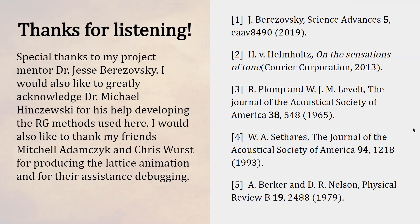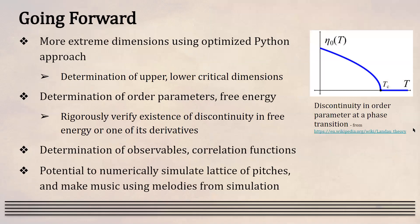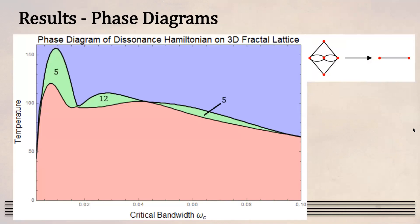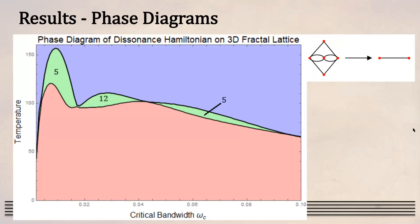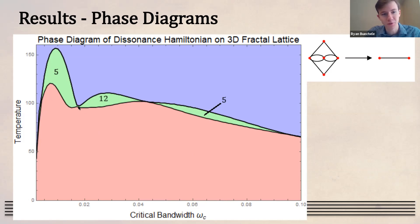A question was raised about a slide showing the phase diagram — there appears to be a small bridge between the '5' and '12' phases. Ryan explains that the recursive search for phase boundaries only runs to a certain resolution, so the phase boundaries for each phase are slightly off. They do actually connect when run at higher resolution, but that takes much longer to compute.